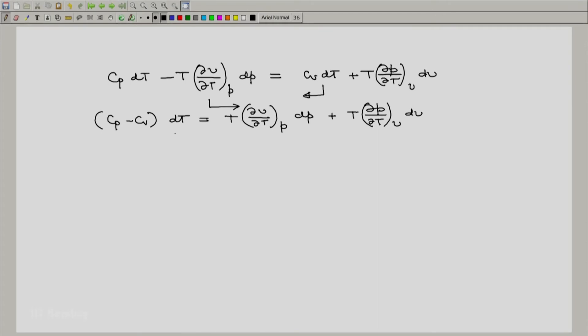Now notice that we have a dT on the left hand side and a dP and dV on the right hand side. So the neat way to proceed is we consider T to be a function of P and V. In that case on the left hand side you can write dT equal to partial of T with respect to P at constant V dP plus partial of T with respect to V at constant P dV.